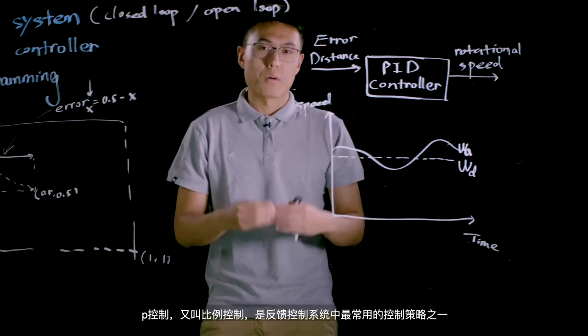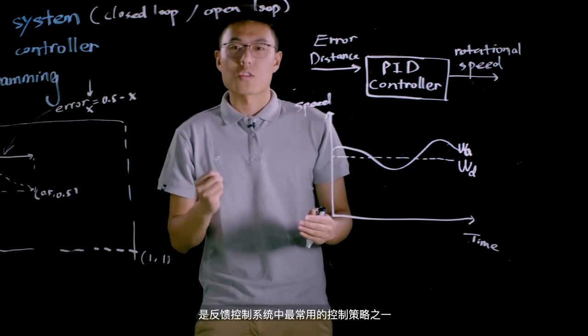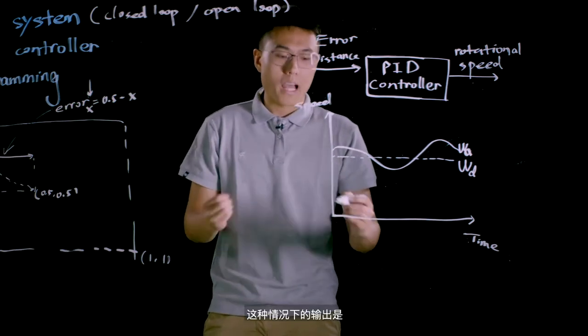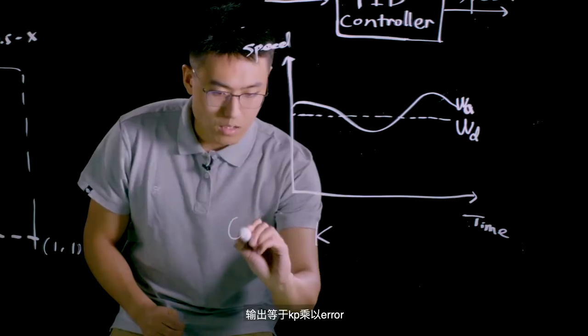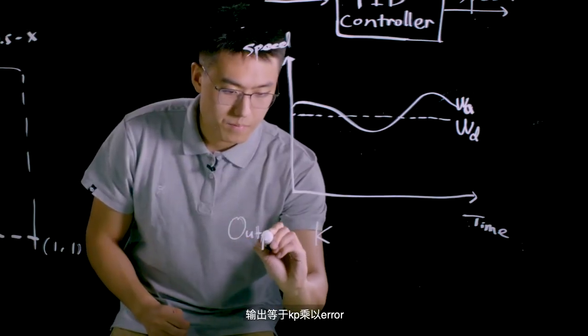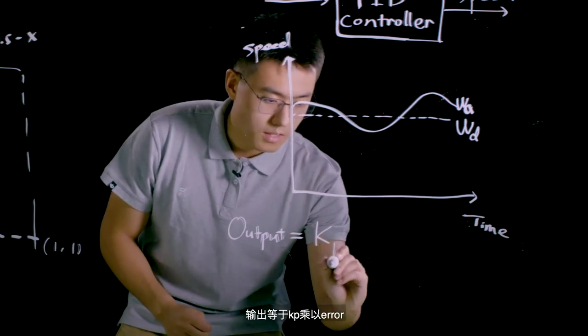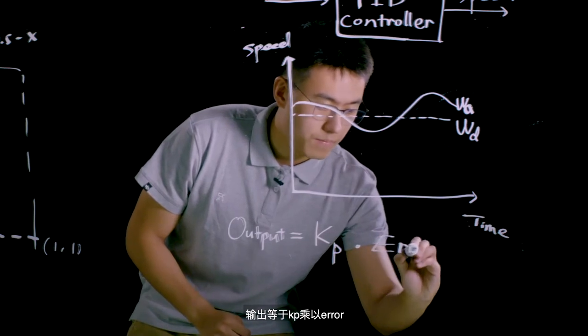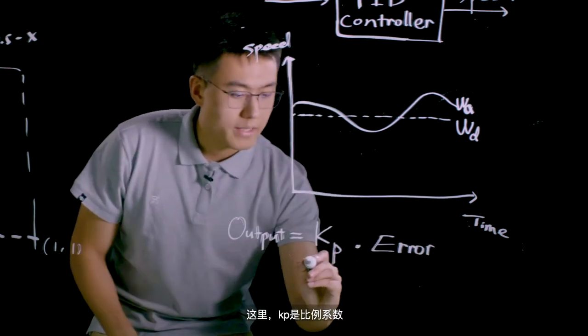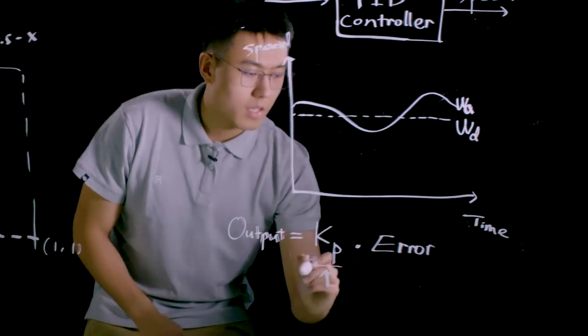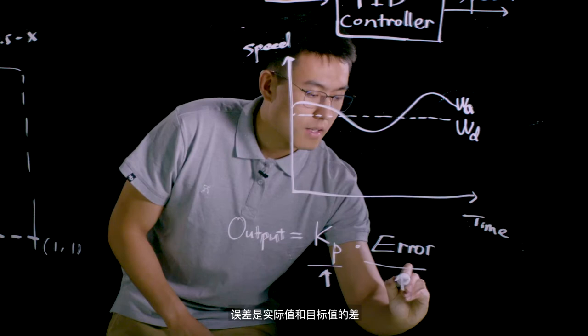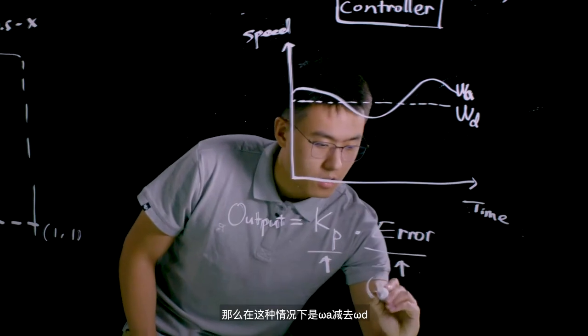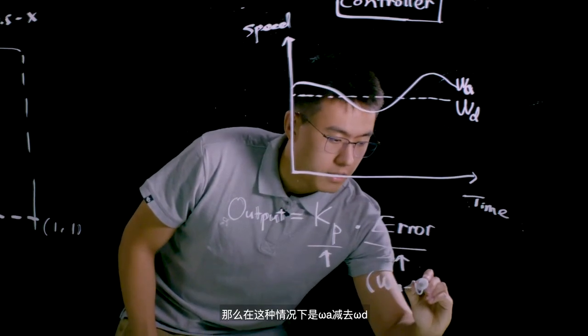P control, or proportional control, is one of the most frequently used control strategy in feedback control system. P denotes proportional. And the output under this case is output equals to kp times error. Here kp is the scale coefficient. And error is the difference between the actual value and the target value. So in this case it's omega a minus omega d.